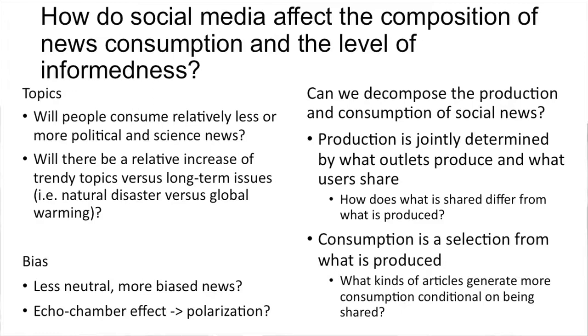Production is jointly determined by what outlets produce and what users share. Even what you see on the screen is already an equilibrium outcome, and of course what people share depends on what they read. We're not going to solve this at all — I just want to highlight this as part of the overall research agenda and why it's going to take us all collectively years to really sort it out. Consumption is a selection from what's produced.